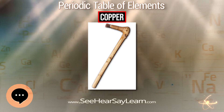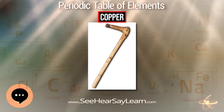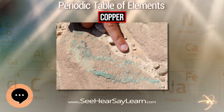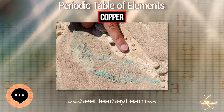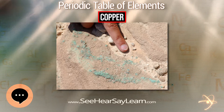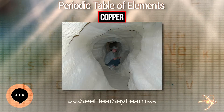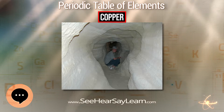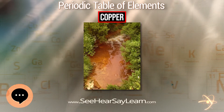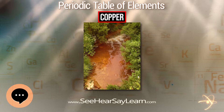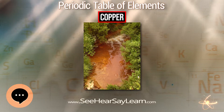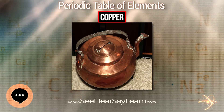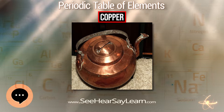The maximum permissible current density of copper in open air is approximately 3.1 × 10⁶ A/m² of cross-sectional area, above which it begins to heat excessively. Copper is one of a few metallic elements with a natural color other than gray or silver; pure copper is orange-red and acquires a reddish tarnish when exposed to air.